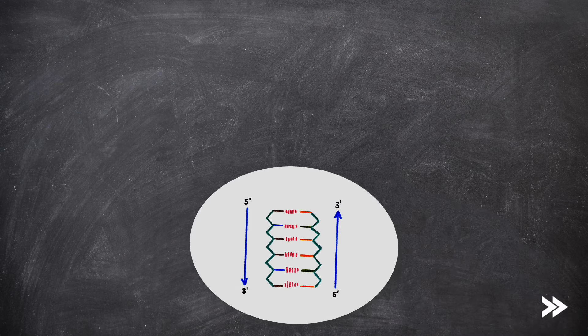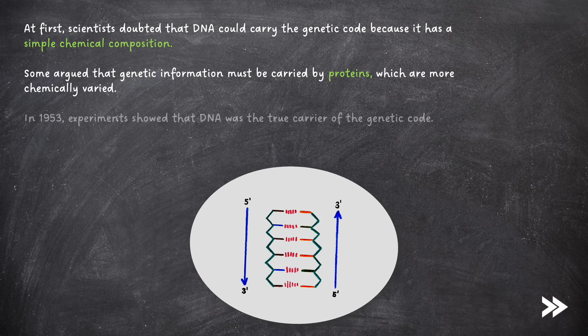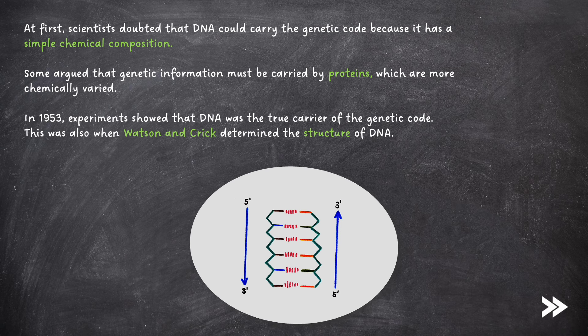Let's move on to a bit of history. At first, scientists doubted that DNA could actually carry the genetic code, because it has a simple chemical composition. Some argued that genetic information must be carried by proteins, which are more chemically varied. However, in 1953, experiments showed that DNA was the true carrier of the genetic code. This was also when Watson and Crick determined the structure of DNA.